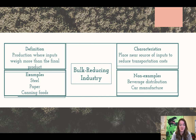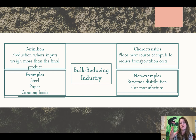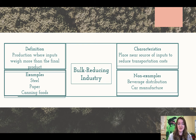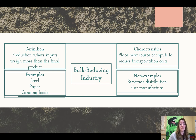Bulk reducing industry: the definition is production where the inputs weigh more than the final product — we are reducing the bulk. We place it near the source of inputs to reduce transportation costs because heavy stuff is expensive to ship. Examples include steel, paper, and canning foods. Paper comes from trees — the trees are really heavy, and a final paper product is much lighter than trying to ship an entire tree. So we make that industry really close to sawmills and where they're cutting lumber. I actually grew up in a community like this — they felled lumber and shipped it to the paper mill.